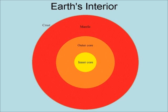The interior of the Earth has several layers: the solid crust, which forms the surface of the Earth and is where we live; the mantle; the liquid outer core that produces the Earth's magnetic field; and the solid, largely iron inner core.